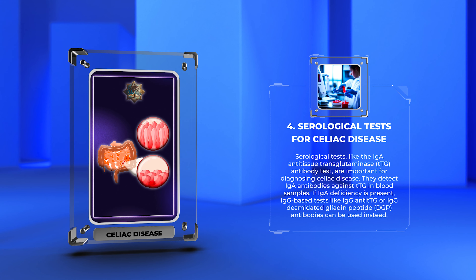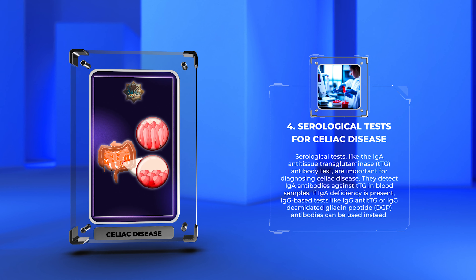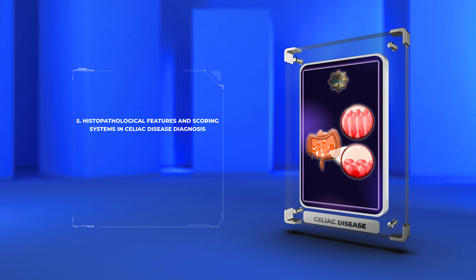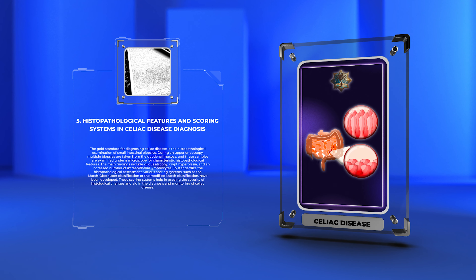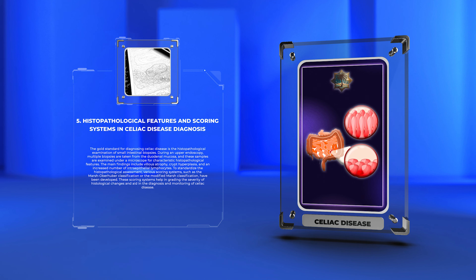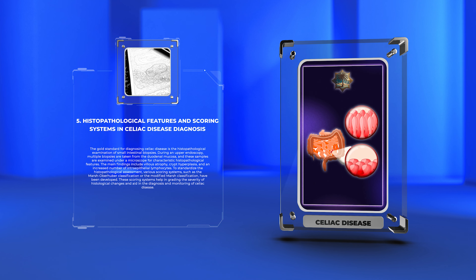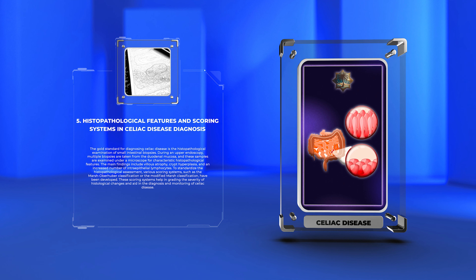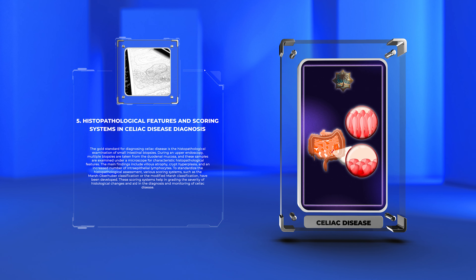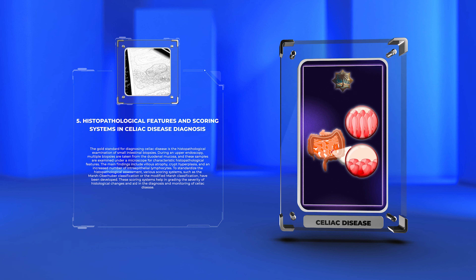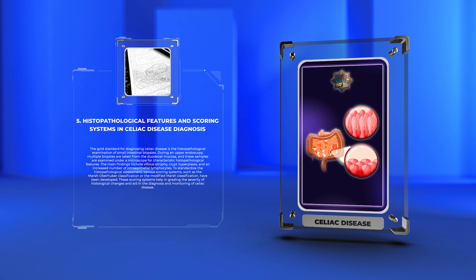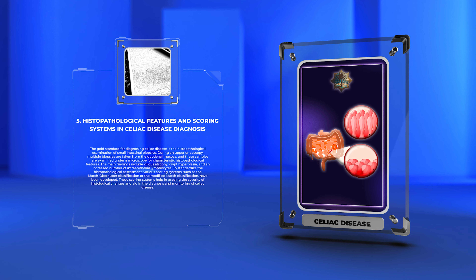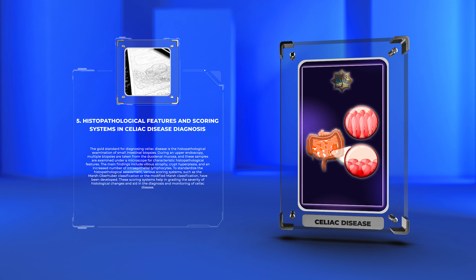If IgA deficiency is present, IgA-based tests like IgA anti-tissue transglutaminase or IgA deamidated gliadin peptide (DGP) antibodies can be used instead. The gold standard for diagnosing celiac disease is the histopathological examination of small intestinal biopsies. During an upper endoscopy, multiple biopsies are taken from the duodenal mucosa and examined under a microscope for characteristic histopathological features.